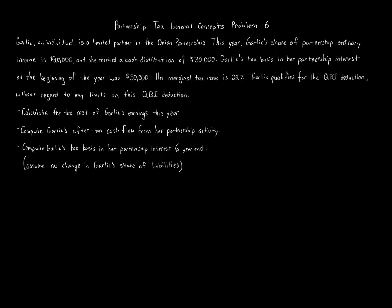Garlic qualifies for the QBI deduction without regard to any limits. Calculate the tax cost of Garlic's earnings this year. Compute Garlic's after-tax cash flow from her partnership activity. Compute Garlic's tax basis in her partnership interest at year end, and assume there's no change in Garlic's share of liabilities. This problem has a lot going on but it's actually pretty simple — the key is that you just follow the order of the questions, go from top to bottom.